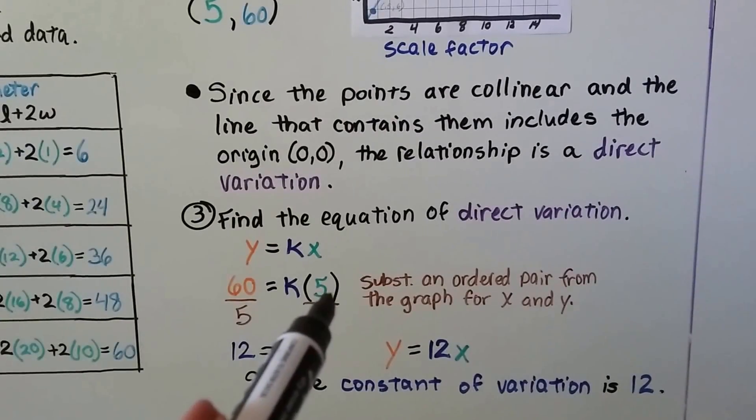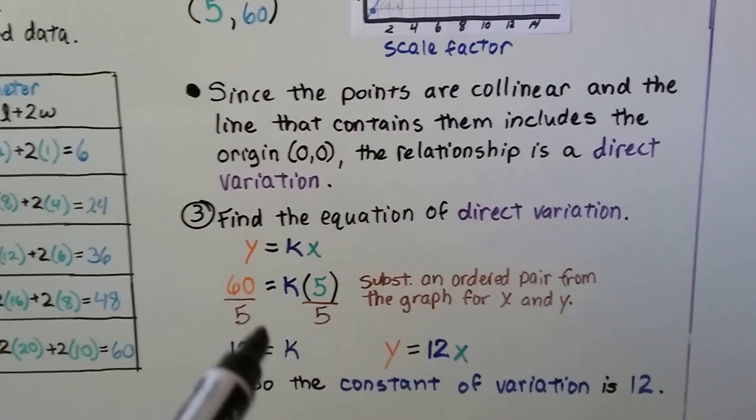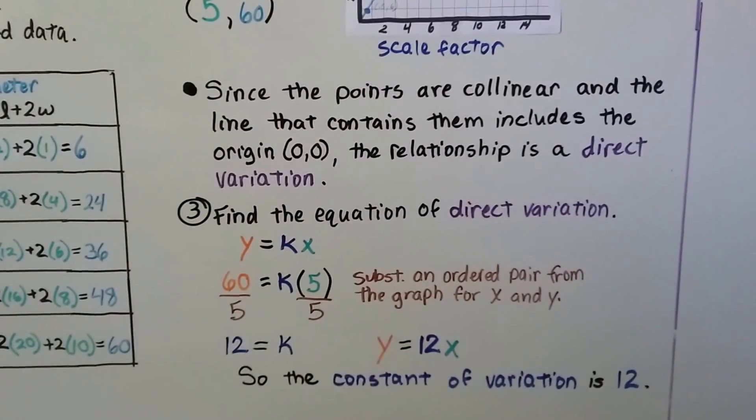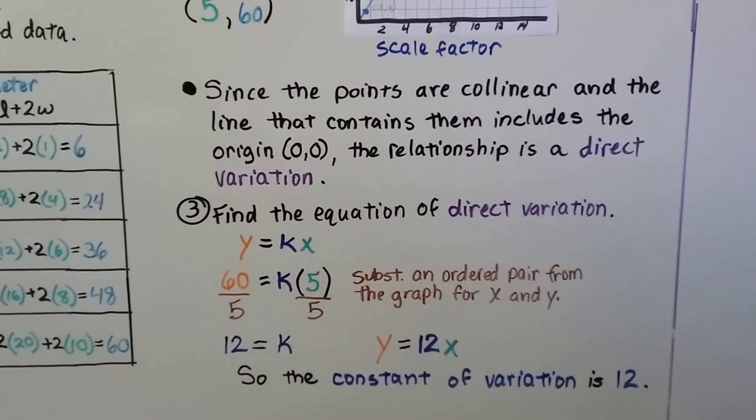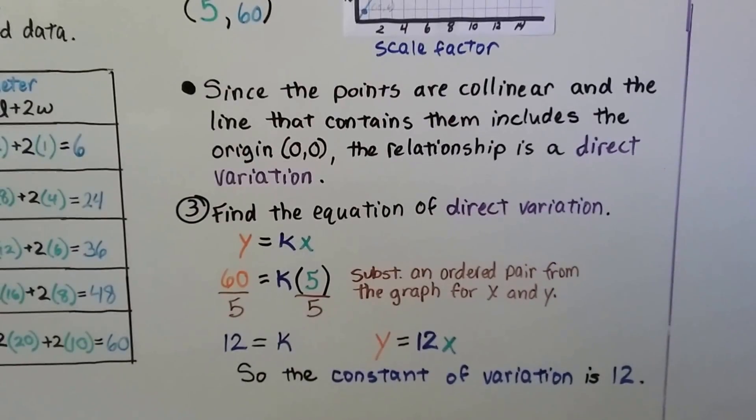We can divide both sides by this 5 to solve for k, and we get 12 equals k. So we've got y equals 12x. So the constant of variation is 12.